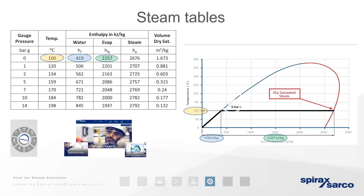With excessively wet steam, there's far less energy present than the process expects. So not only is there a reduced mass of steam reaching the process, there's less energy within that steam too — the process time extends, there's huge energy inefficiency, and we have the mechanical defects caused by erosion, corrosion, and water hammer. For this reason, wet steam should be considered one of the biggest enemies of a well-designed steam distribution network.